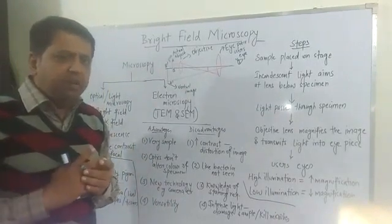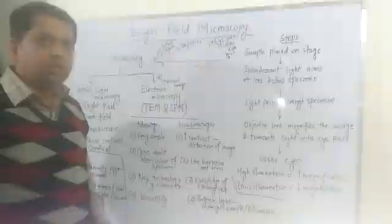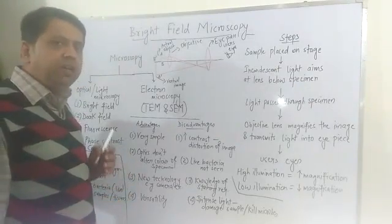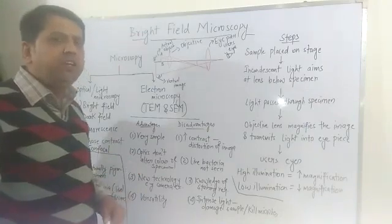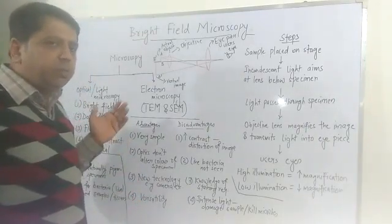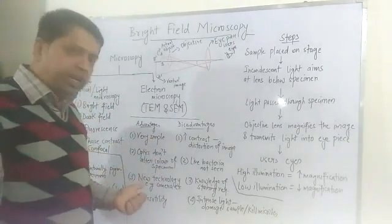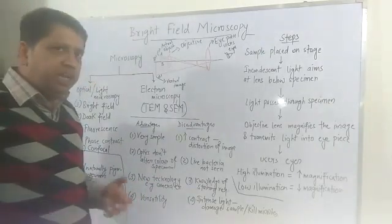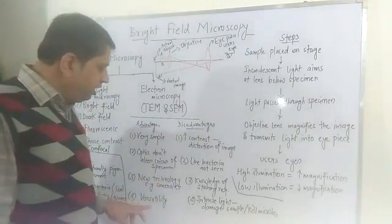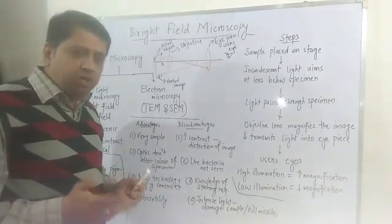The second advantage is that its optics do not alter the color of the specimen, because the microscopy is made up of simple and transparent optics that do not interfere with the specimen's color even if it is not stained. Third, new technology can also be adopted — for example, a camera or video camera can be used alongside to photograph specimens. Fourth is versatility: it can be used for a wide variety of stained samples, including bacteria and pharmacognosy specimens.